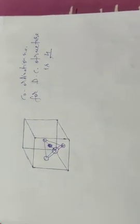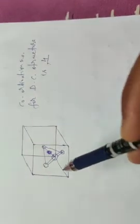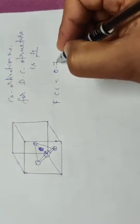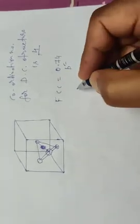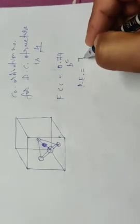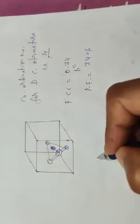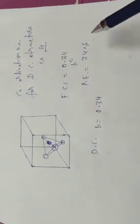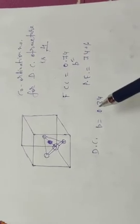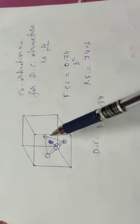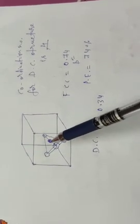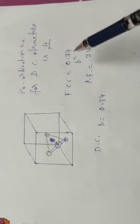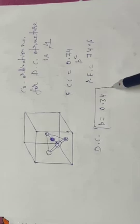The main lattice for the diamond cubic structure is FCC. We know that for FCC the packing fraction is 0.74 and packing efficiency is 74%. But in the case of diamond cubic, the packing fraction is 0.34. This is less than 0.74 because of the tetrahedral void and the additional atom — due to this additional atom, the diamond cubic structure is stretched and its packing fraction decreases.